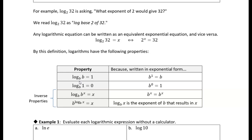The second property: log base B of 1 equals 0. Why? It's obvious if you rewrite it in exponential form — B to the 0 equals 1. So 0 is the exponent on B that gives you 1. In fact, on any base, anything to the 0 power gives you 1.